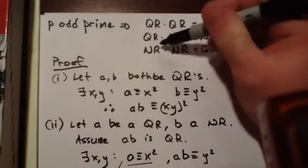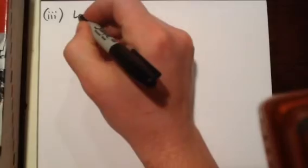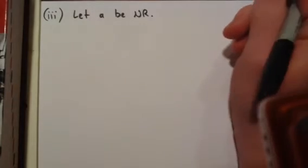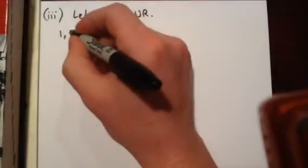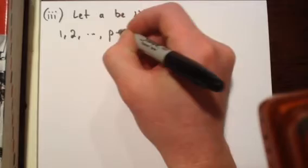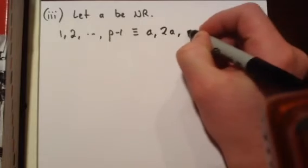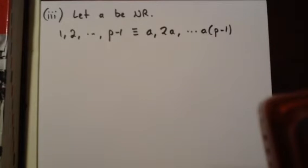Now let's prove that a non-residue times a non-residue is a quadratic residue. So this argument is going to be a little bit different than the previous two. So let's let A be a non-residue. And recall that if we take all the numbers between 1 and P minus 1, and multiply them by any number, we get the same list back but perhaps in a different order.